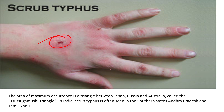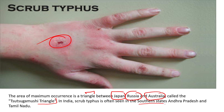The area of maximum occurrence is called the Tsutsugamushi triangle — the region covering Japan, Russia, and parts of Australia. Starting from India, going up to Japan, Russia, and some area of Australia, this triangle shape is where maximum occurrence of scrub typhus is seen. In India, scrub typhus is most often seen in the southern states of Andhra Pradesh and Tamil Nadu.